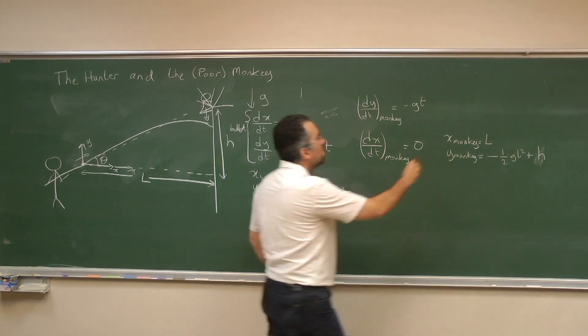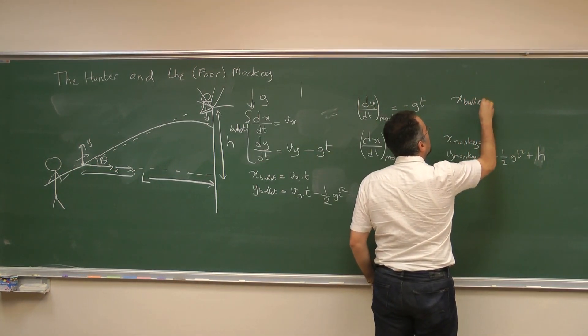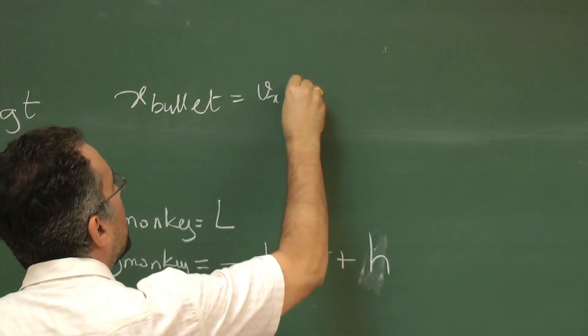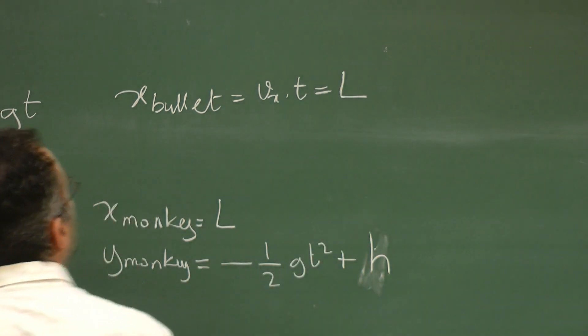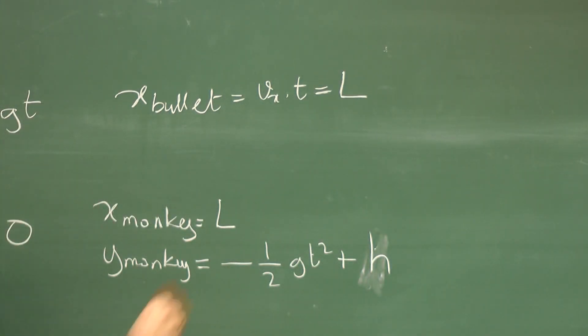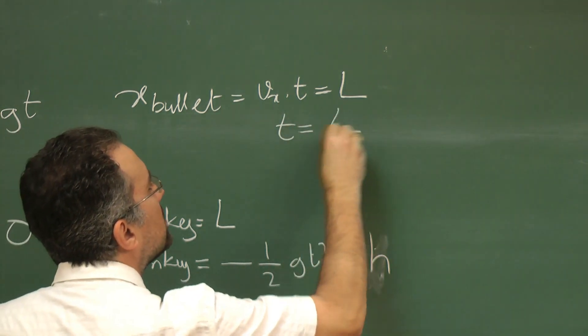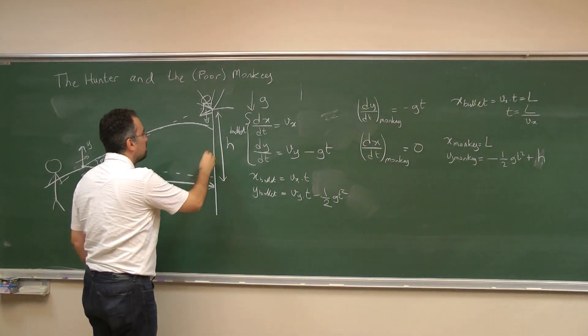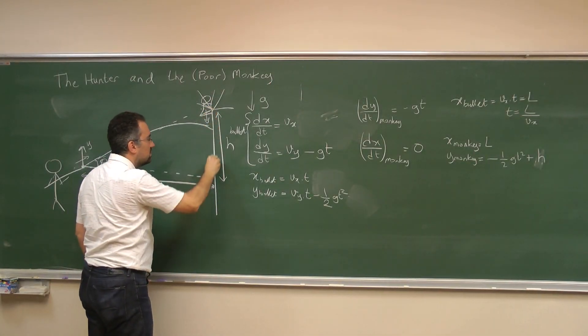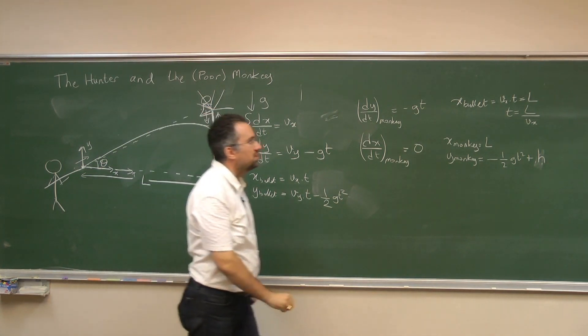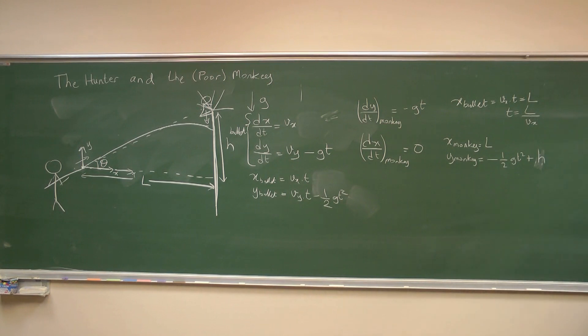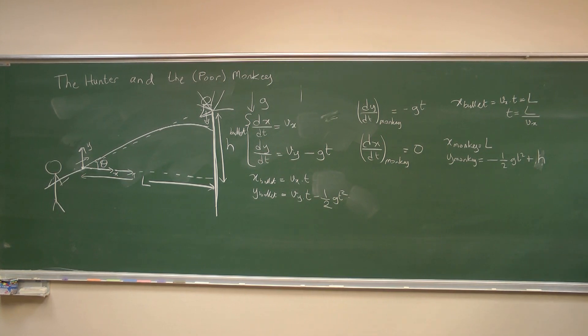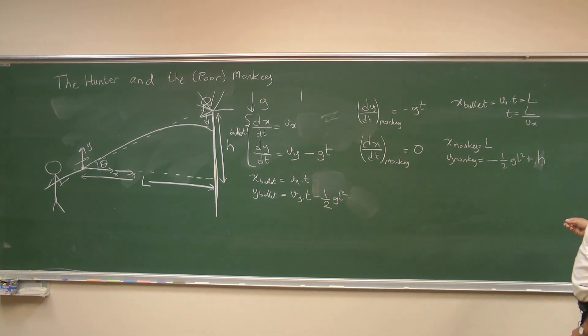Now I want to know when the bullet reaches the distance L. So x_bullet is v_x times t and that is L. So this happens at t equals L over v_x. So now I know at what point in time the bullet is on this line at the tree. Now at that exact time, at what height is the bullet and at what height is the monkey is the question.